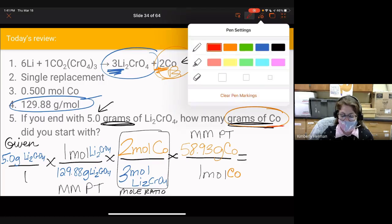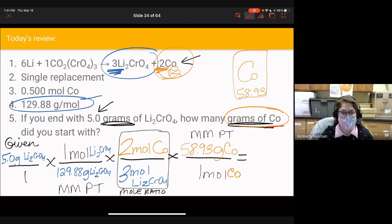The key point of stoichiometry is canceling out your units. Grams of Li2CrO4 cancel out, then mole of Co cancels with mole of Co. Now we need the calculator. On the top, we're going to do 5 times 2 times 58.93.